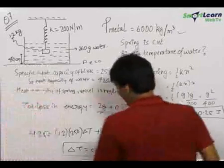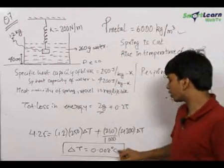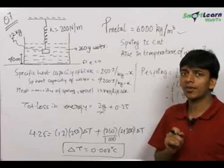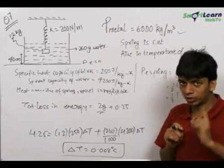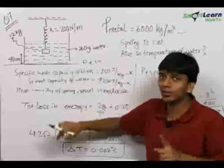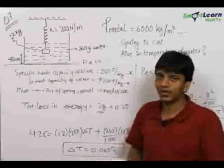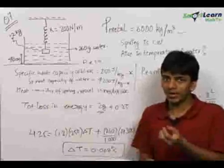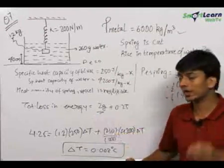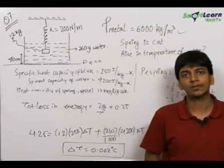The final answer for the rise in temperature of water is 0.003 °C. The important lesson from this question: whenever there is a loss in potential energy of a block inside water, there is an equivalent volume of water going upwards, gaining some potential energy. So the net loss in potential energy is always less than you would expect, and you must not forget this.